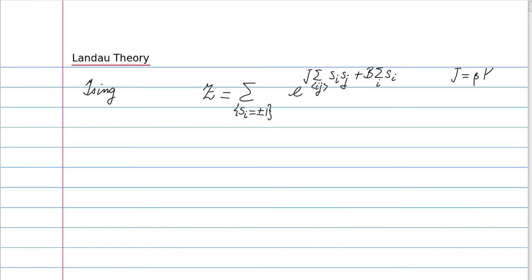In the exponent the coupling constant J includes a factor of beta = 1/(k_B T), where k is the bare coupling constant. Similarly, B = beta times H, where H is the bare field. I define the average spin on the lattice as M, the average value of S_i summed over all spins and divided by the total number N. If all spins are plus one, M equals plus one; if all minus one, M equals minus one; and in general M lies between plus and minus one.